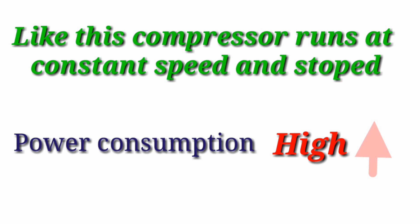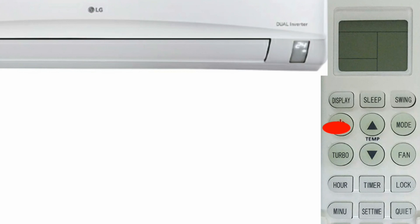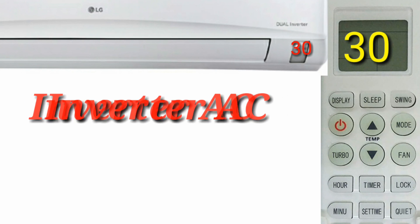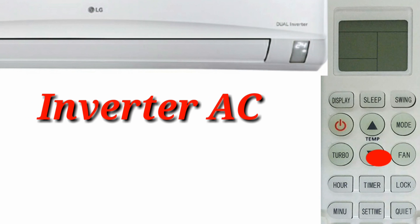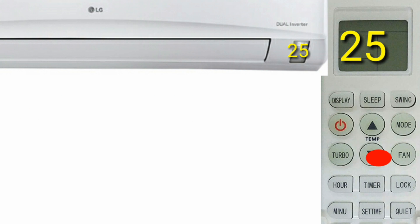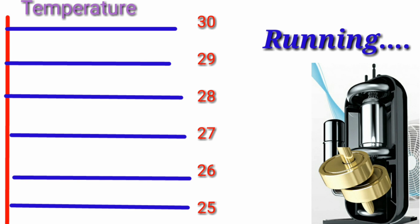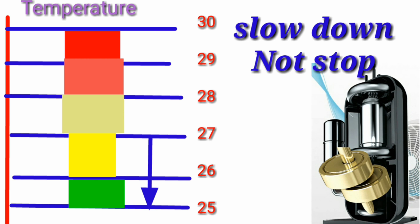Next, take a look at how the compressor works on inverter AC. If you set 25 degrees on AC, the compressor runs at high speed. When it reaches the desired temperature, it slows down. When room temperature rises again, the compressor starts running at higher speed.